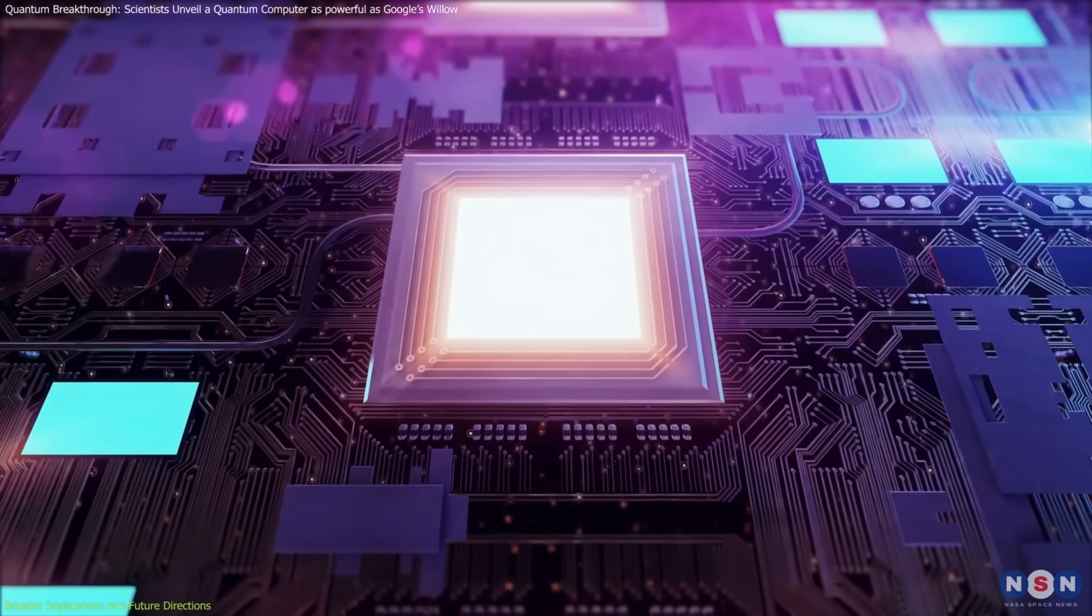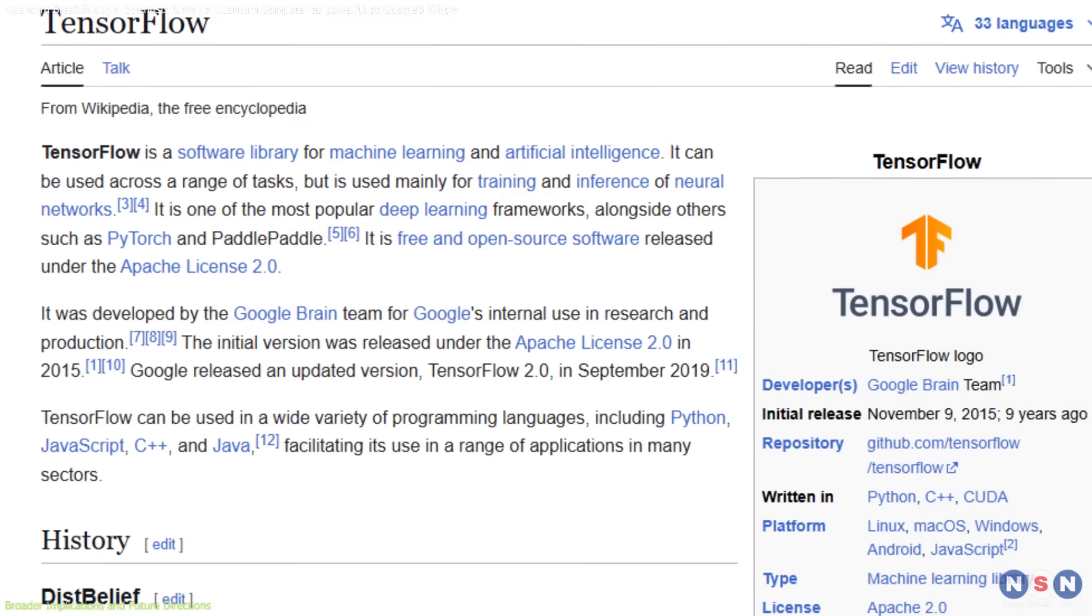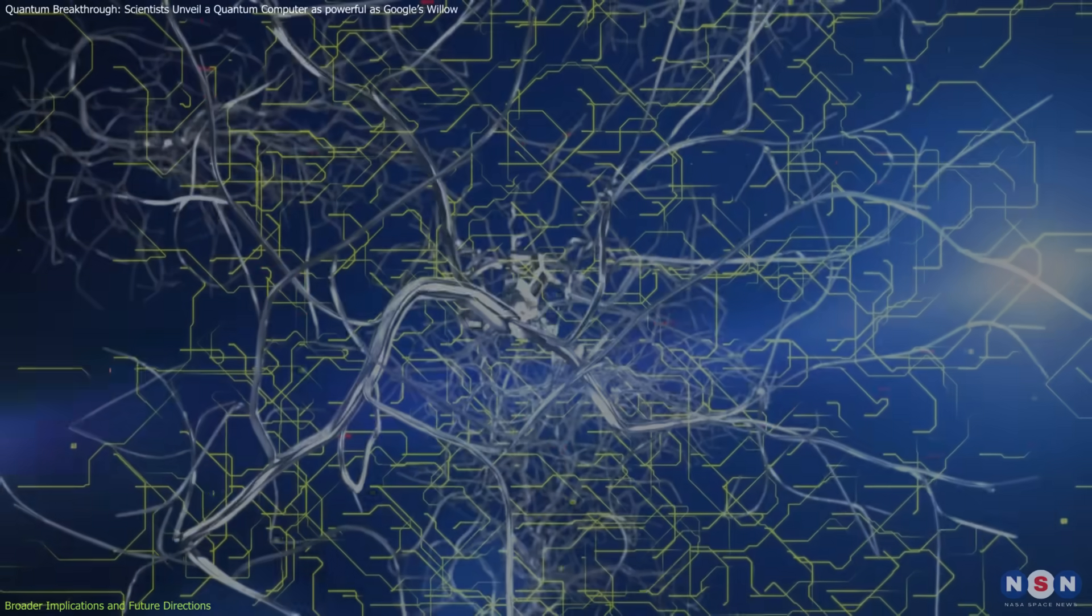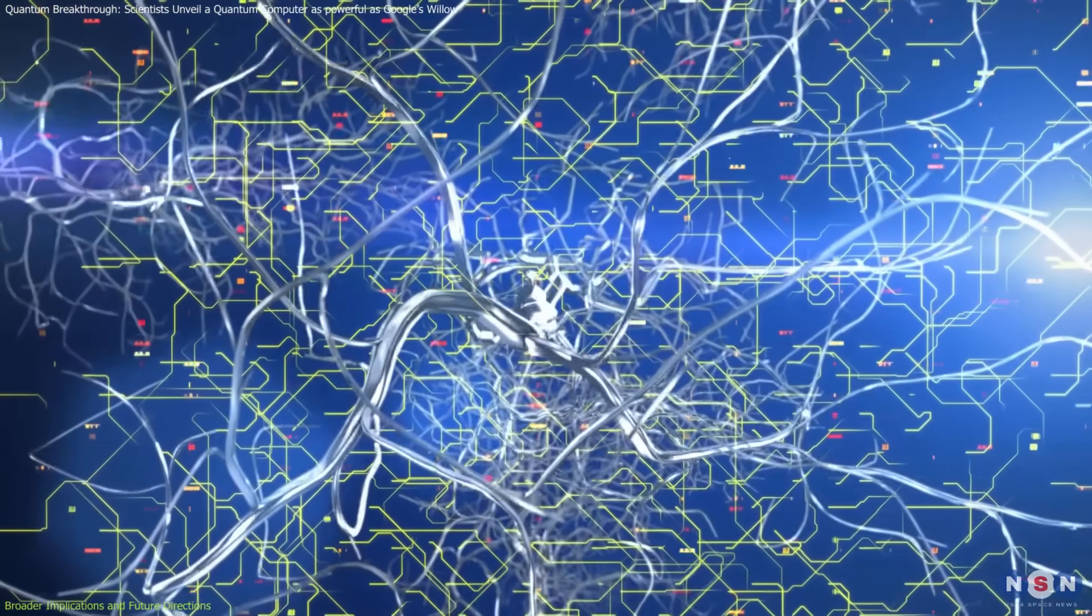Beyond building powerful processors, scientists are finding new ways to use them. For instance, Google's Quantum TensorFlow integrates quantum computing into machine learning frameworks, accelerating tasks like training neural networks.